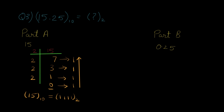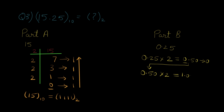So 15 in decimal is equal to 1111 in binary — that's just Part A. Now for Part B, we solve it just like question 2. We write down the fraction 0.25 and multiply it by 2, which gives 0.50. We write the integer part — 0 — separately. Then 0.50 × 2 = 1.0, and we write down the integer part, which is 1.